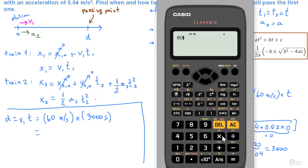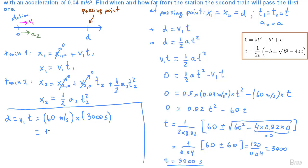We take this product. 60 times 3000 is 180,000 meters. We can also write this as 180 kilometers. And there we have it.